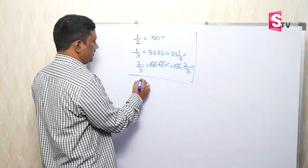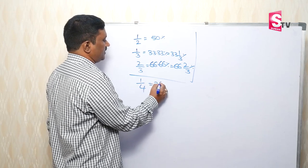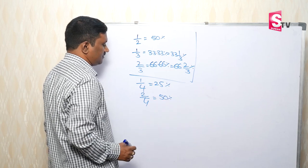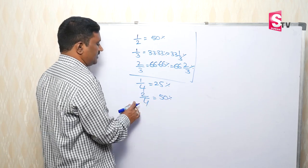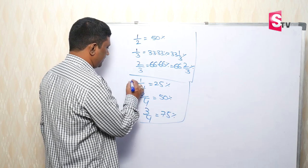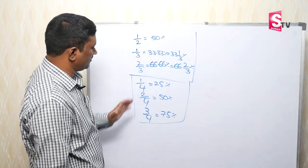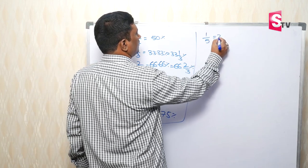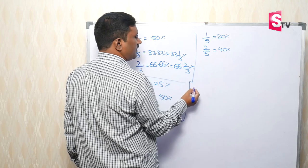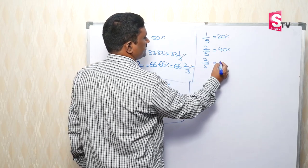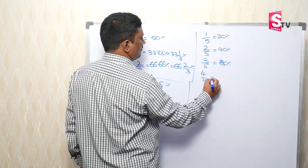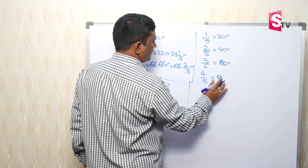So next, 1 by 4 is 25%. 2 by 4 is 50%. The difference between 1 by 4 and 2 by 4 is 25%. So, 1 by 5 is 20 percentage, 2 by 5 is 40 percentage, 3 by 5 is 60 percentage, 4 by 5 is 80 percentage.